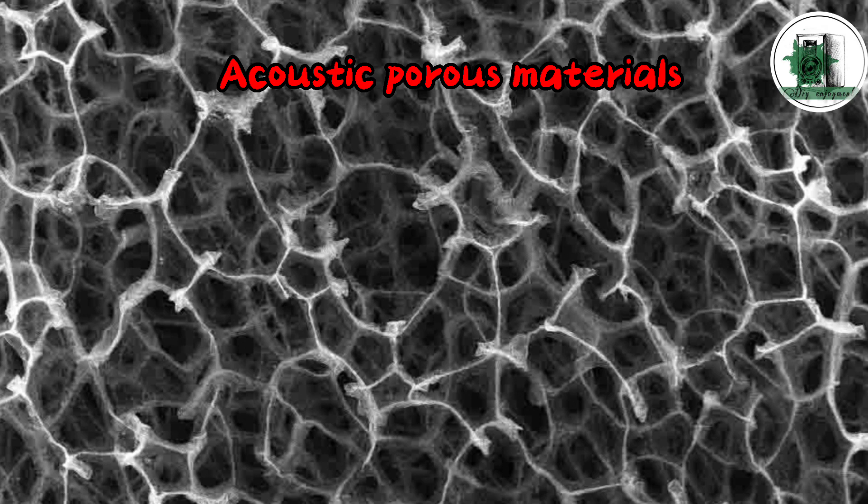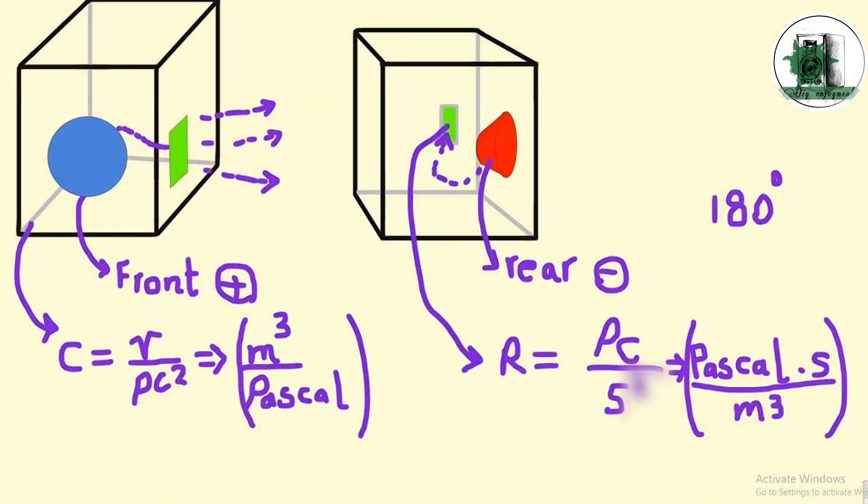Suppose we have an enclosure, where the compliance is defined by this relationship. These ports introduce resistance, which follows this formula. The P-shaped symbol, or rho, represents air density in the left formula, while in the right formula, it refers to the density of the acoustic material. V is the box volume in cubic meters, C is the speed of sound, and S is the port area in square meters.